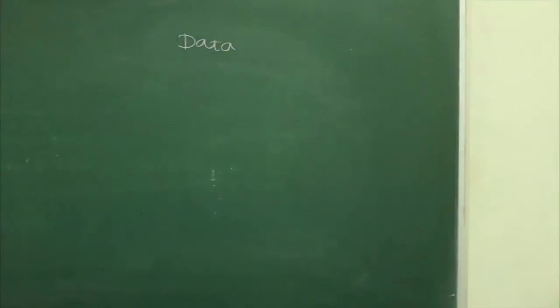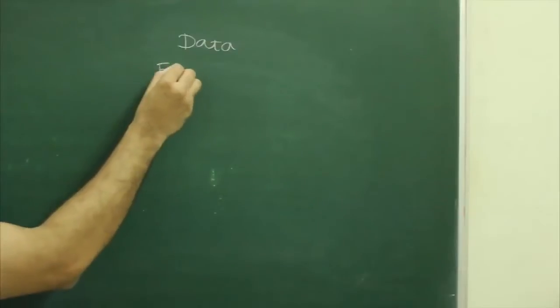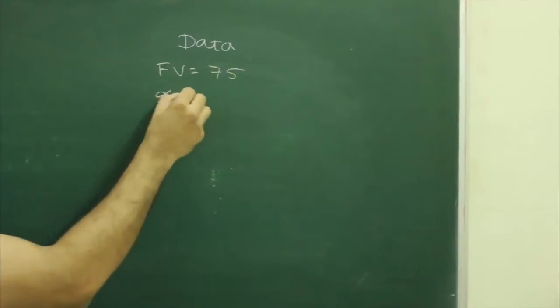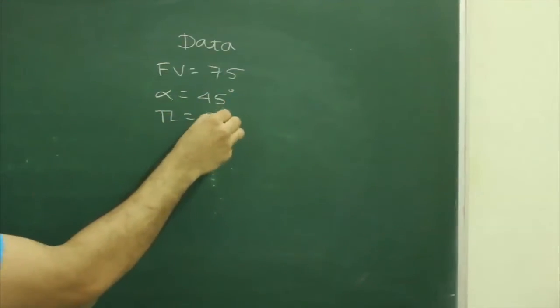First, we will write given data: front view 75M, alpha 45 degree, true length 95.